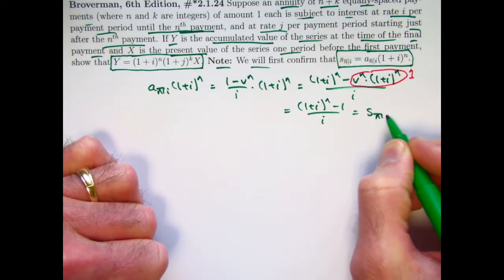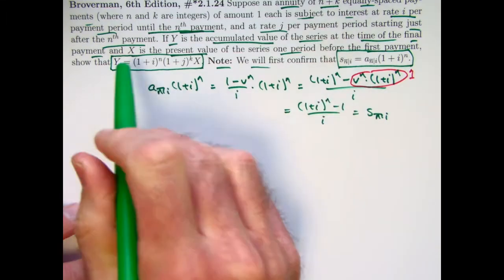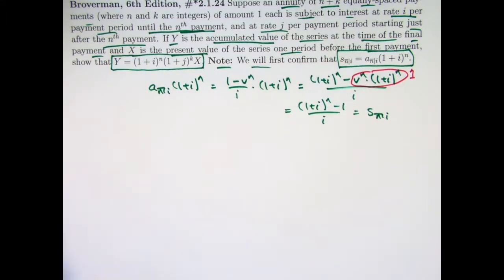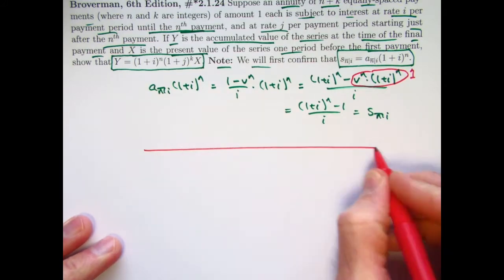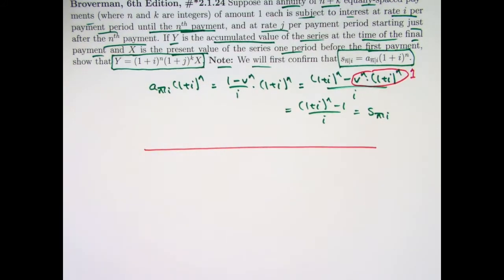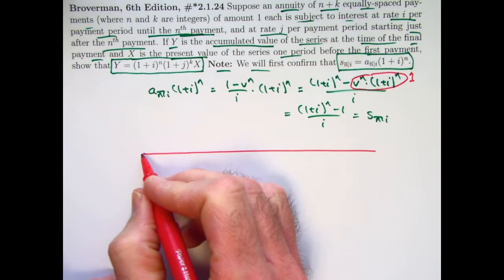This equals s_n with interest rate i. That's our first thing to confirm, and that's going to be helpful in algebraically confirming this. Now I'm about to write down a bunch of symbols. I guess I will go ahead and draw a number line here. It's going to get kind of complicated and confusing, and very easy to make a mistake. I will do my best to explain it.